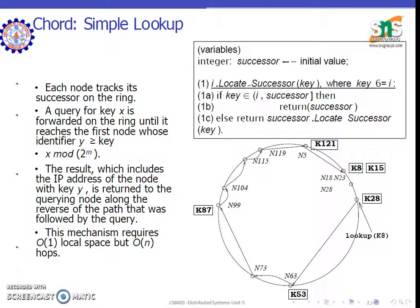We will have a simple look on Chord. Track the successor on the ring where y is greater than or equal to key x mod of 2 power m. This will indicate the IP address of the node with key y, which is returned to the querying node along with the reverse of the path followed. This mechanism calculates O(1) local space but O(m) overall.